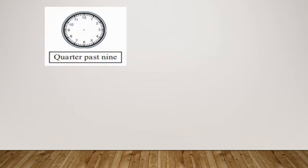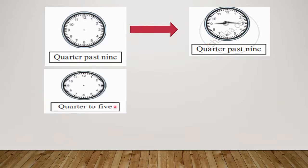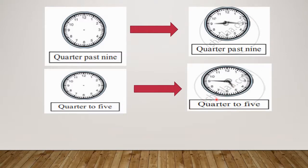The second one: draw the hands for quarter past nine. The long hand will come on three and the shortest one will come on nine. The third one is quarter to five — the longest hand will come on nine and the shortest hand will come on five. Like this you will draw quarter to five.